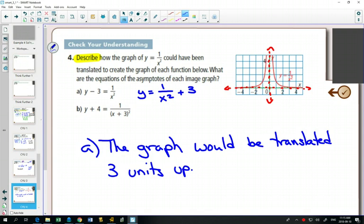On our original graph, we have asymptotes at x equals 0 and y equals 0. If your graph is moved three units up, where are our new asymptotes? Well, moving x equals 0 up and down won't change anything. But moving y equals 0 up 3 would change it to y equals 3.